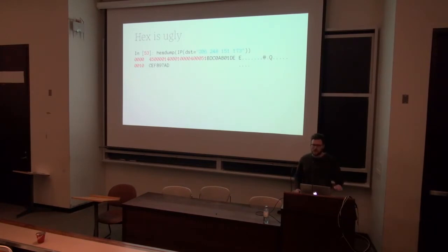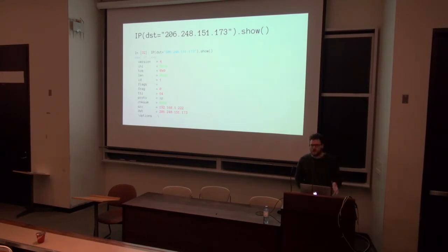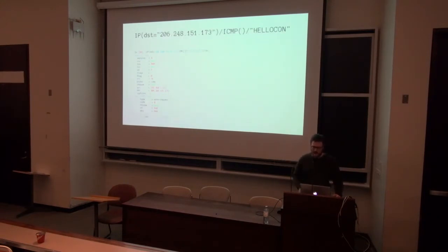If you've ever done network programming before the days of Scapy, you were probably writing C and spending time looking at bit flags. It's way nicer when you just have this Python object — I can just print it out and I see all of the flags of that IP packet are just set. I can manipulate them like any field in a Python object. I can add in the ICMP so you'll see that my pretty-printed version has this inner bit which is the echo request. I add in the hello con bit, and now I'm actually sending an echo request with a block of data.